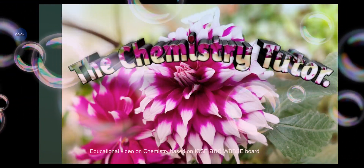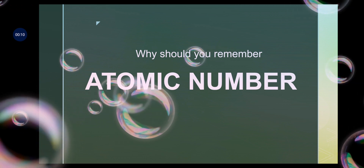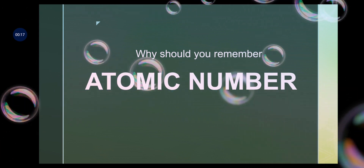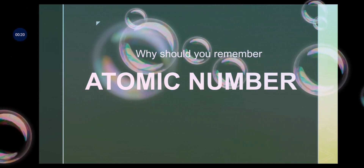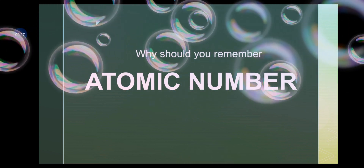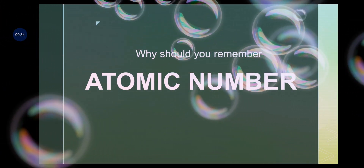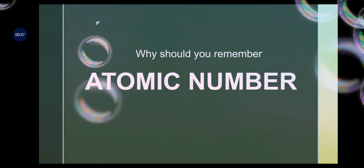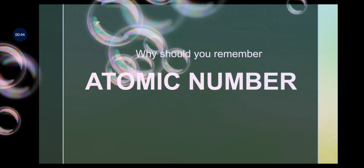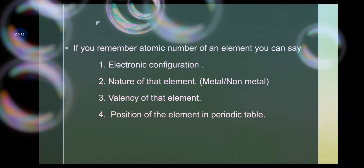One of the most important topics for students is atomic number. Generally in class 7 or 8 we learn about atomic number — what is its definition and many related things. Teachers advise us to remember at least the first 20 elements of the periodic table, such as hydrogen, helium, lithium, beryllium, boron, carbon, nitrogen, and so on, with their atomic numbers. But why should we learn and remember them? I will explain that one by one — just follow the video.